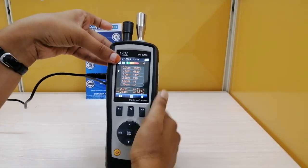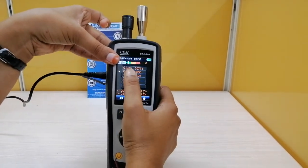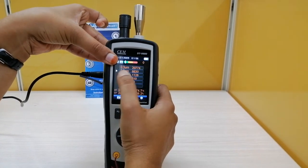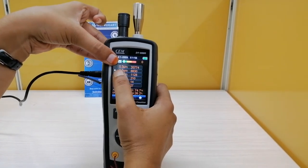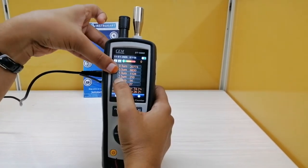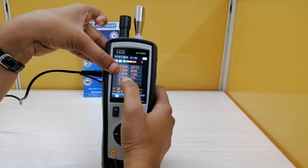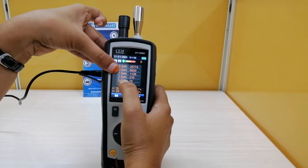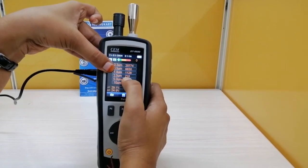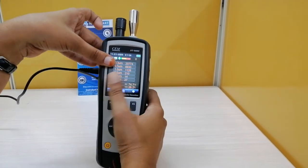Now you can see here 0.3 micrometers shows 20,774 micrograms per meter cube. From 0.3 to 0.499, there are 20,774 particles, or 2.5 micrometers to 5 micrometers - sorry, 2.5 to 4.99 micrometers - there are 210 particles. In that way you can calculate the particles present in your atmosphere.